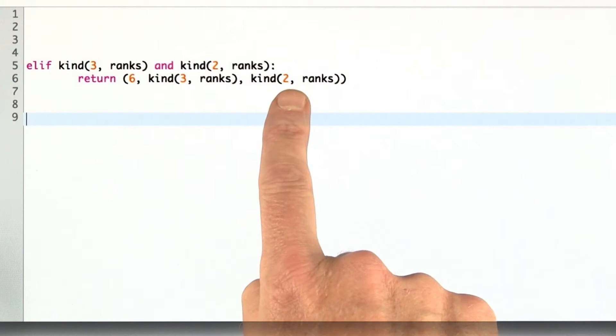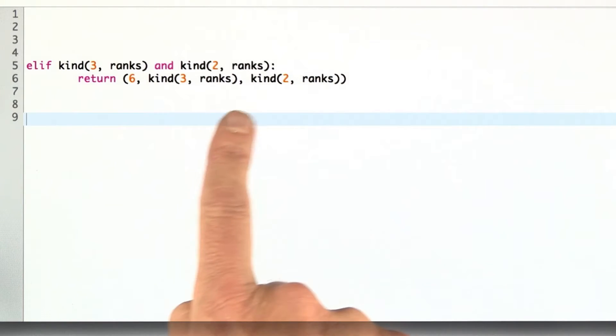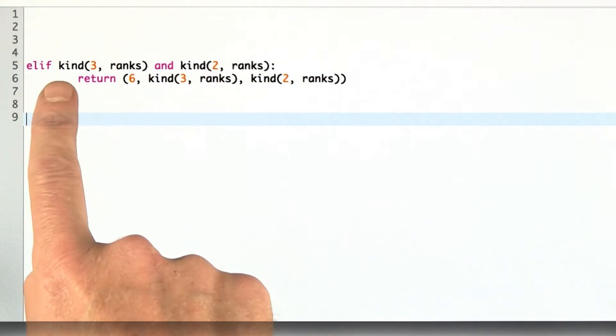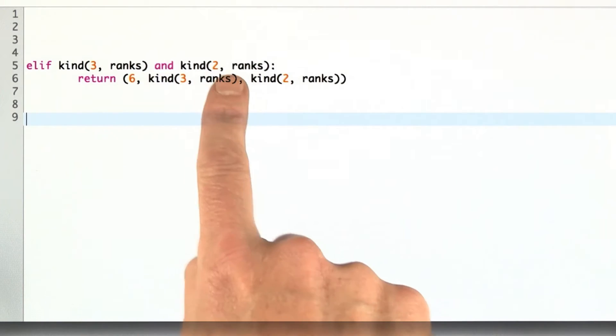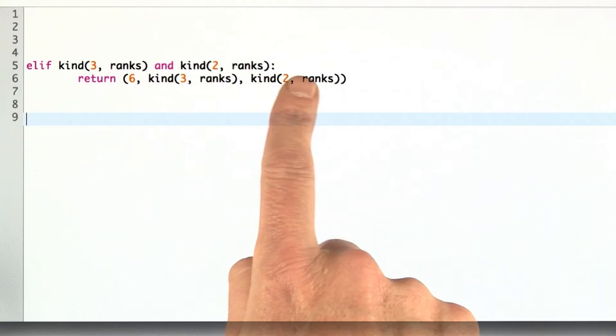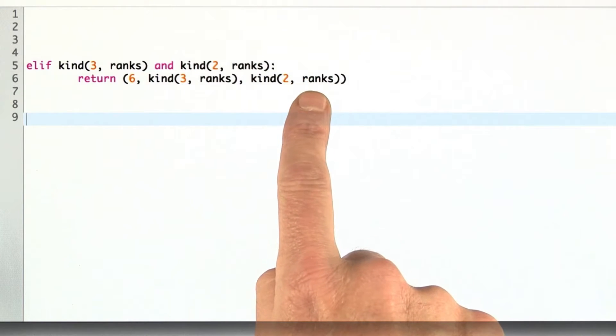Here's a line from my hand rank program that bothers me a little bit. What bothers me here is I'm repeating myself. I'm asking, do we have 3 of a kind in the ranks and do we have 2 of a kind in the ranks? Okay, if we do, that's a full house, and then what are we going to return? 6 is the marker for full house, and then the 3 of the kind and the 2 of the kind. But I'm repeating myself.